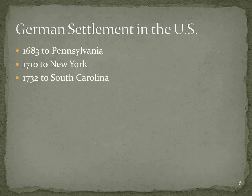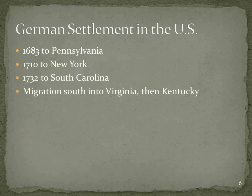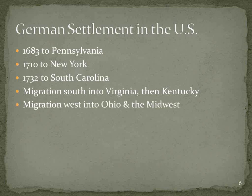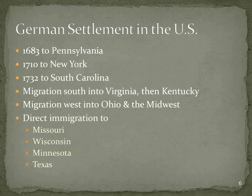In 1732, they started colonies in South Carolina as well. From those Germans in Pennsylvania and elsewhere, migration moved south into Virginia, primarily through the Shenandoah Valley, and from there they spread into Kentucky, the Carolinas, and beyond. As time moved into the early 1800s, migration went west out of Pennsylvania and New York into Ohio and the rest of the Midwest. Then in the 1800s, there was a lot of direct immigration into places like Missouri, Wisconsin, Minnesota, and Texas.